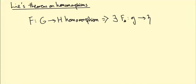We've just seen this theorem that if F is a homomorphism of Lie groups from G to H, then there exists a linear map F star from little g to little h which is a Lie algebra homomorphism.